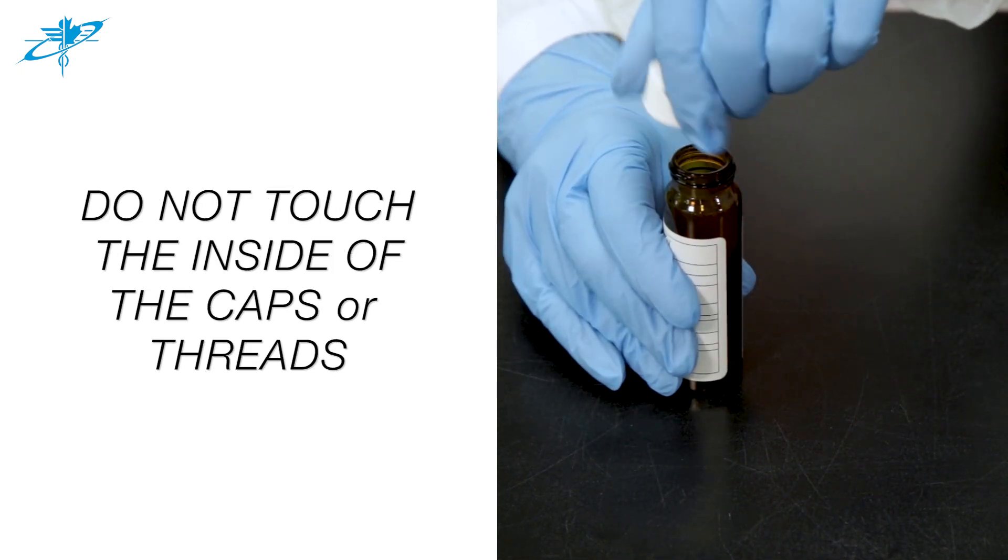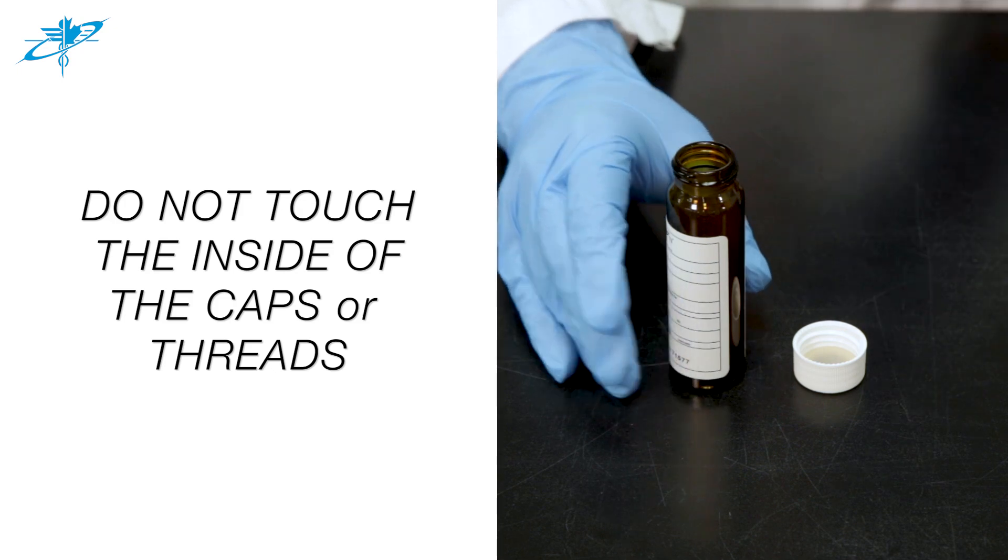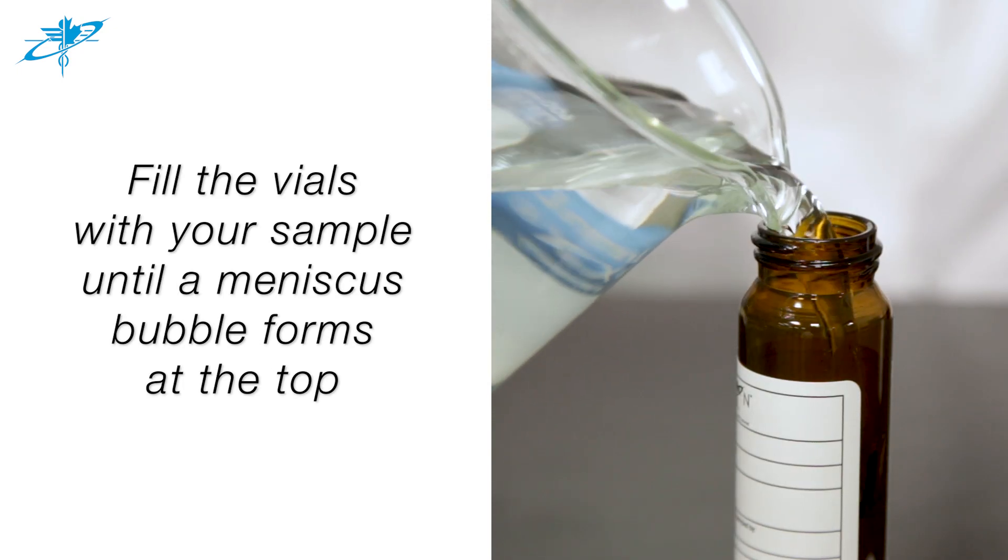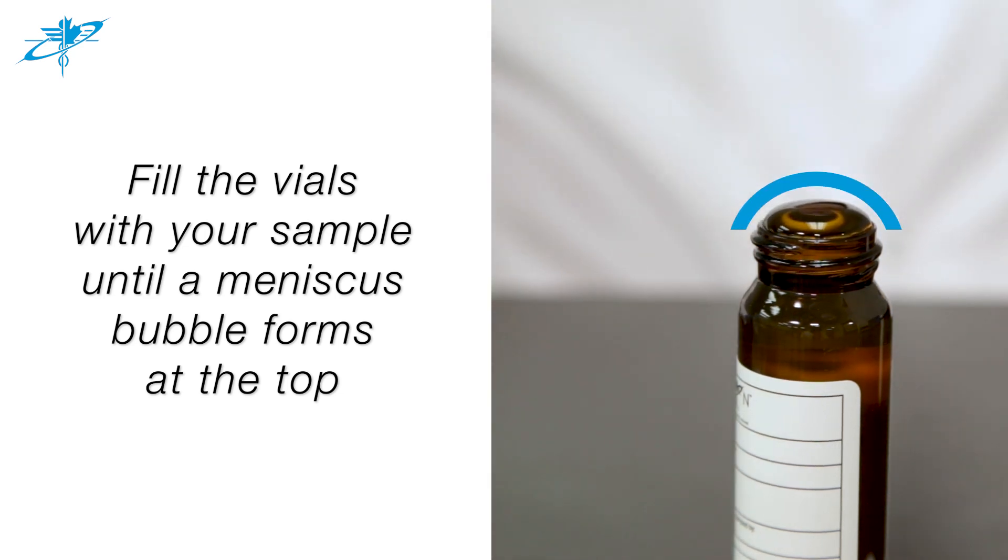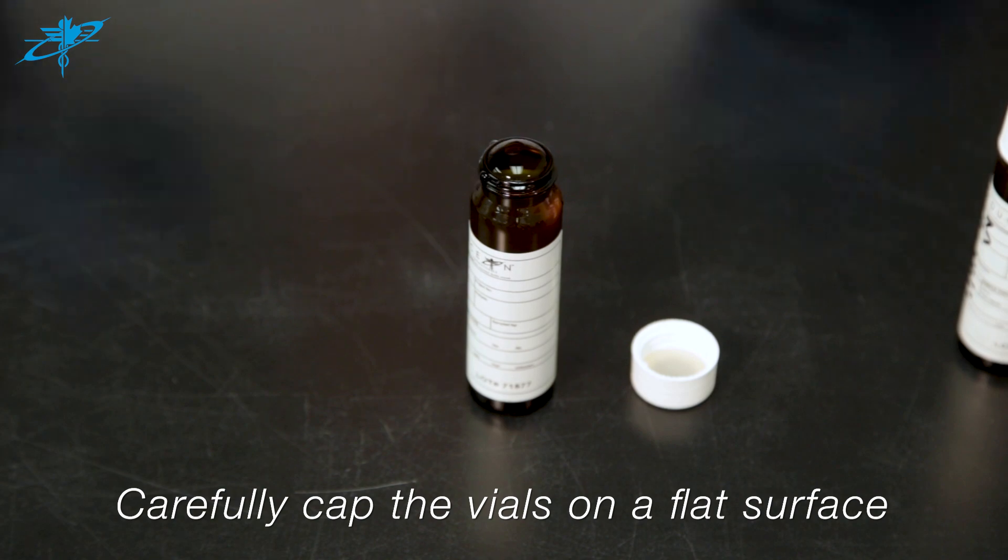Fill the vials with the sample until there is a meniscus bubble at the top. Place the vials on a flat surface and carefully cap the vials. You will notice the top of the cap becomes darker in color.